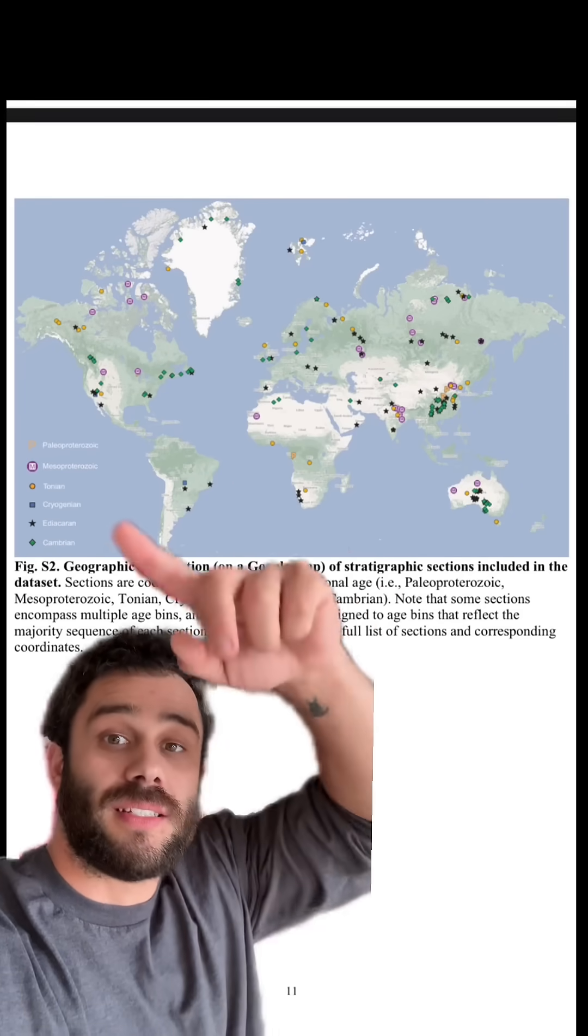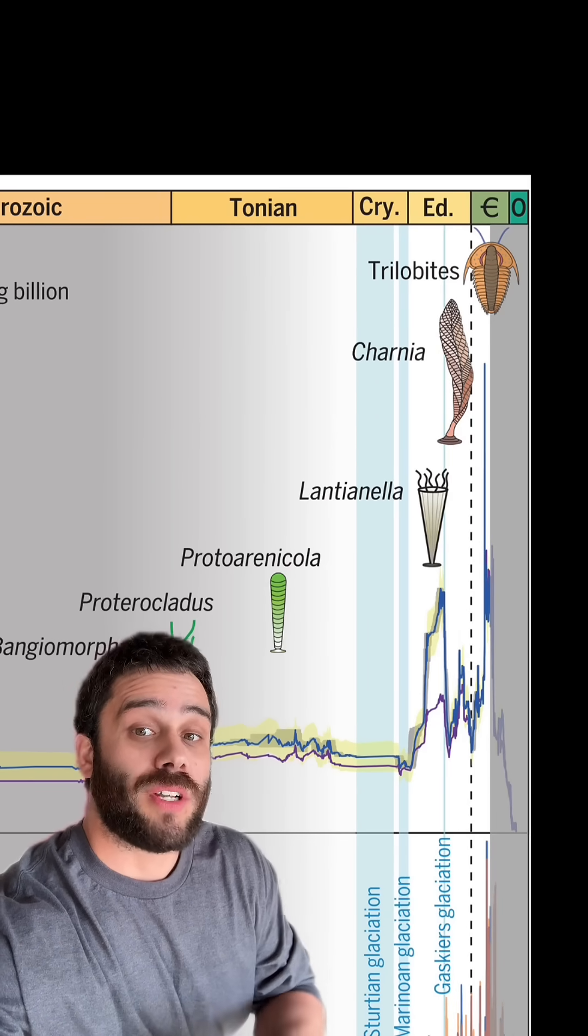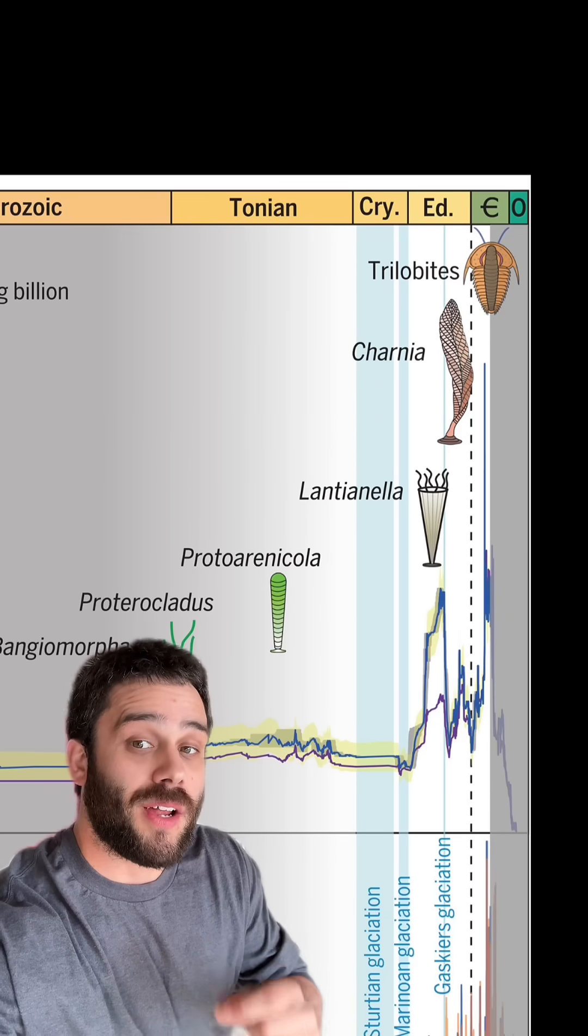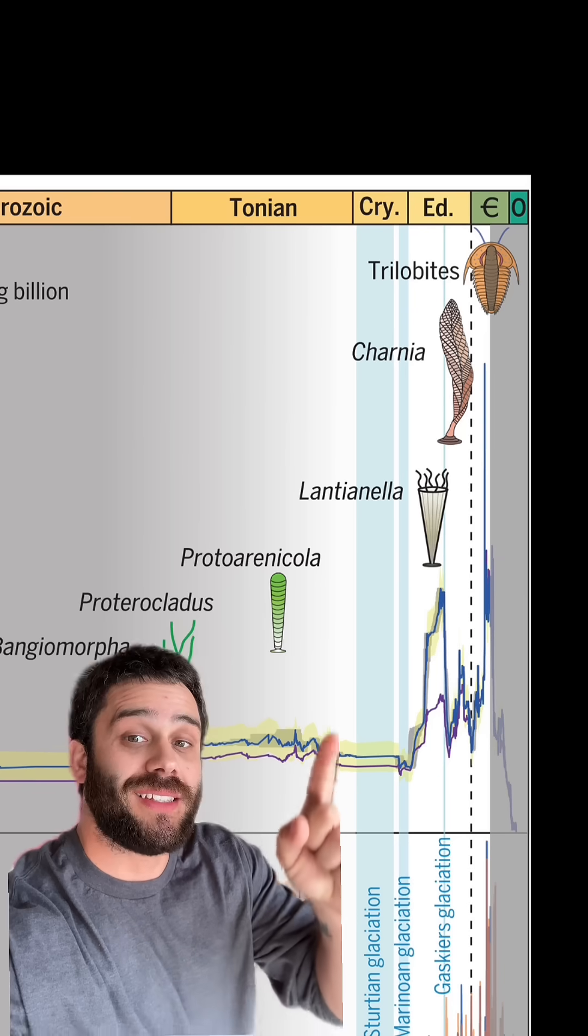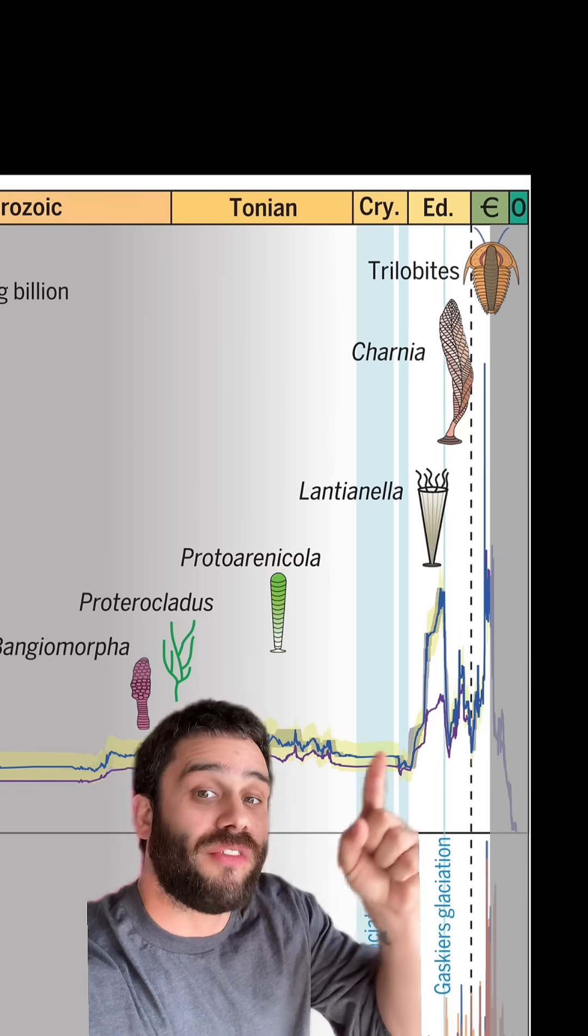But the study looked at samples from all across the world, and they were able to show that something really important for the evolution of life on Earth happened around 700 million years ago, and that is the Ice Ages. The Ice Ages seemed to be a major driver of biodiversity.